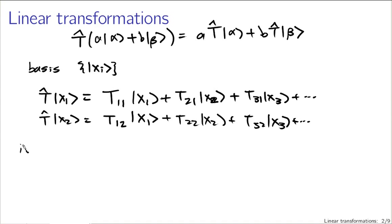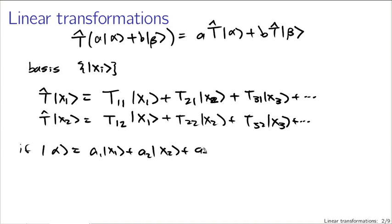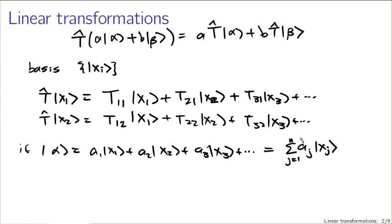So if I have some vector alpha expressed as a_1 x_1 plus a_2 x_2 plus a_3 x_3, and so on up to x_n, I can write that as a sum over j from 1 to n of a_j times x sub j. You can find these components a sub j the way we described in the last lecture. If I apply the transformation T-hat to this vector alpha, I'm going to get a sum of sums — first the sum over j of a_j, and then T-hat applied to x sub j.